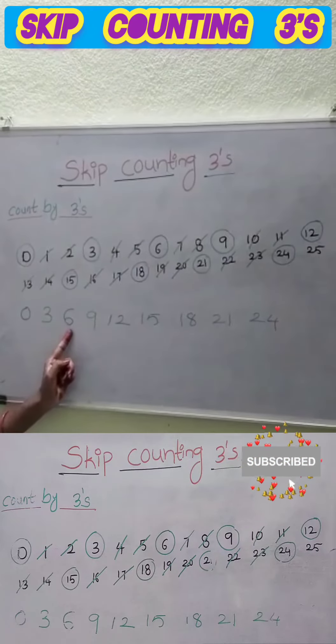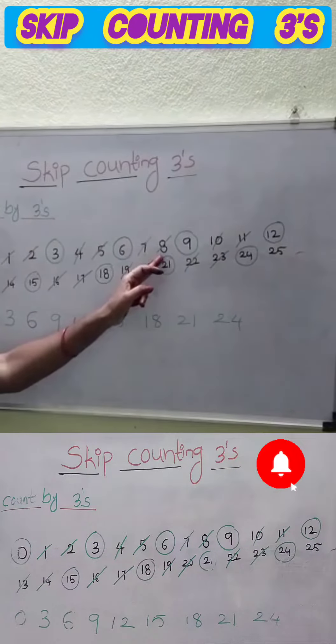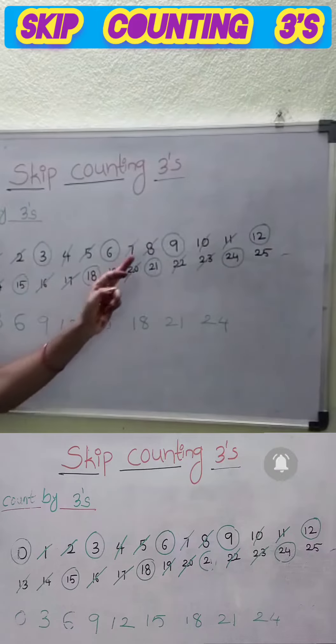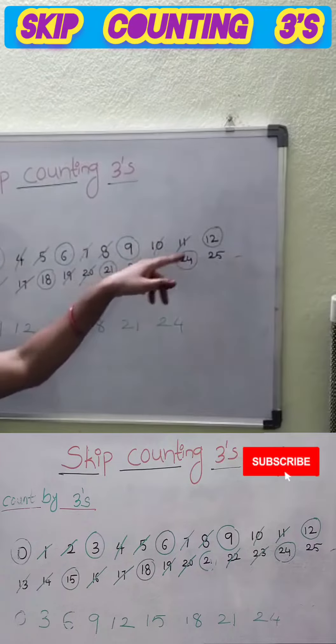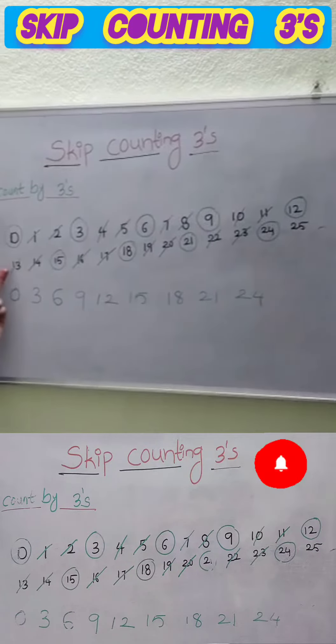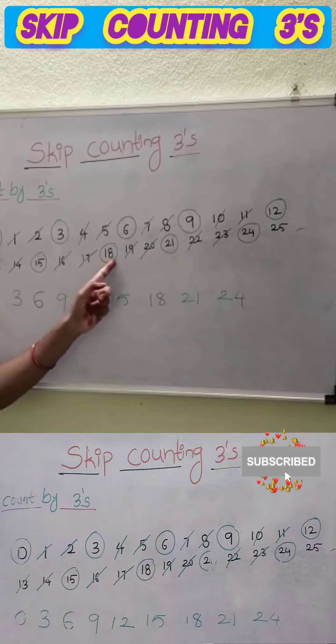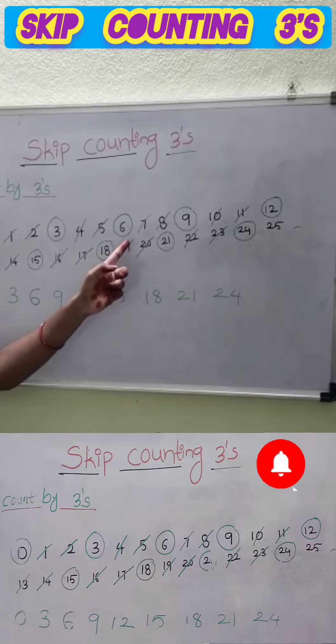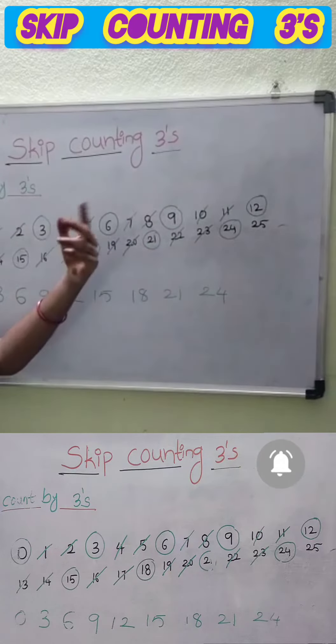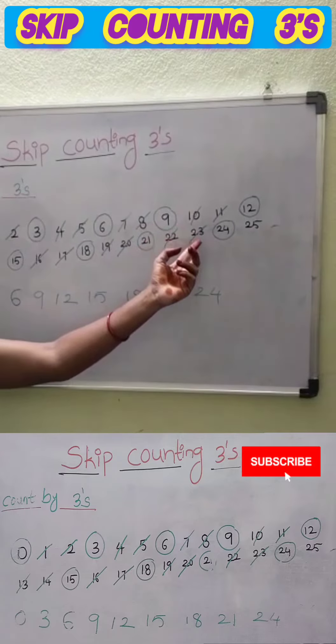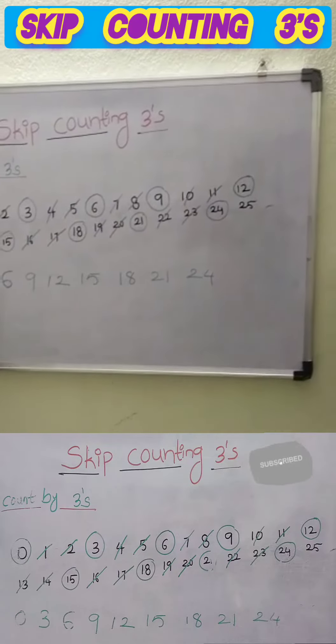7 and 8 skip, 9. 10 and 11 skip, 12. Skip 13 and 14, write 15. Skip 16 and 17, write 18. Skip 19, 20, write 21. 22 and 23 also skip, 24. These are all skip counting by threes.